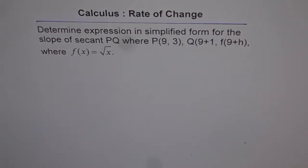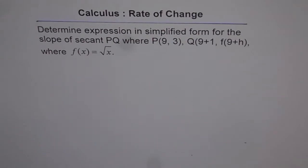Calculus was developed as a result of solving two problems. One was finding the slope of a tangent line at any point on any curve, and the second was to determine the area under the curve. Finding the slope of a secant, and thereby the slope of a tangent line at any point on a curve, is a very important application of calculus — in fact, that's what led to calculus.